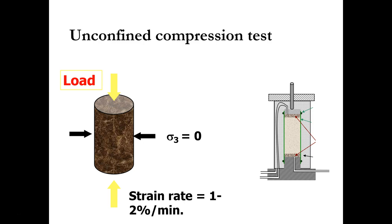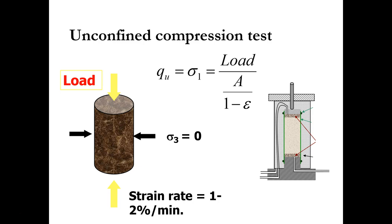You will apply the axial load at a certain strain rate. The commonly used strain rate is 1 to 2% per minute, and at one point the soil sample will fail. You will record that load and calculate the unconfined compressive stress from that load, dividing it by the corrected area.